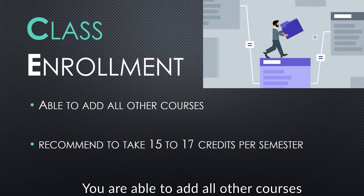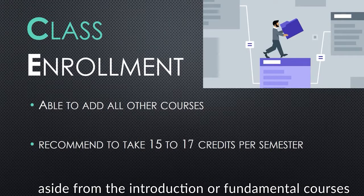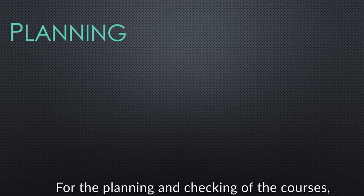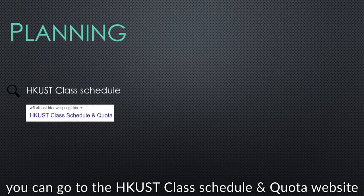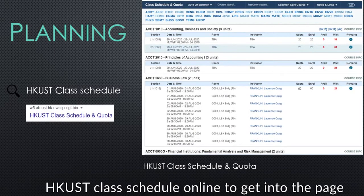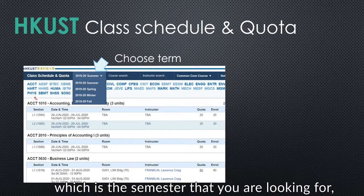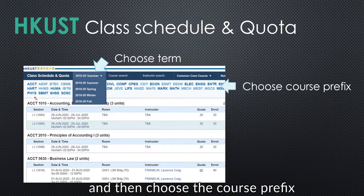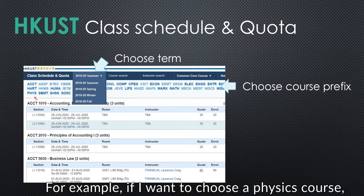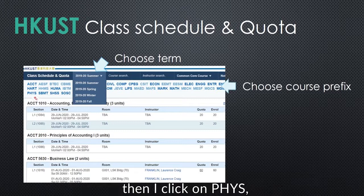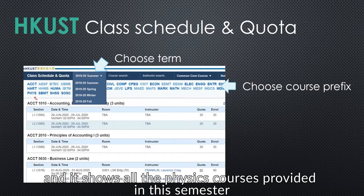You are able to add all other courses aside from the introduction or fundamental courses. For the planning and checking of the courses, you can go to the HKUST class schedule and quota website. You can simply search HKUST class schedule online to get into the page. First, you have to choose the term, which is the semester that you are looking for, and then choose the course prefix. For example, if I want to choose a physics course, then I click on PHYS and it shows all the physics courses provided in the semester.